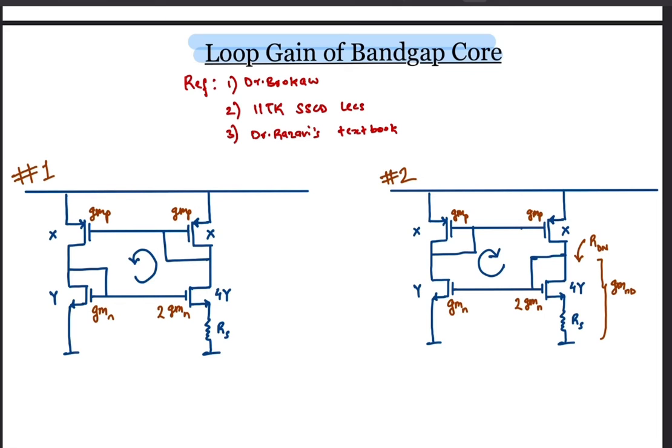Let's first compute the gain from the gate of the NMOS to the drain of the NMOS. Recognize that this topology is simply a common source amplifier with source degeneration.